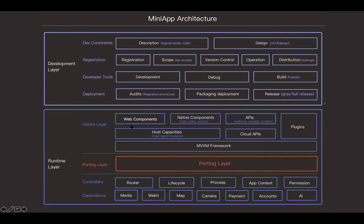The library layer contains many components, like web components and native components such as maps, videos, camera, canvas, and host capabilities. It has many APIs such as network request APIs, set storage APIs, and get location APIs, plus the basic libraries for MiniApp running code. The porting layer lets different user agents decide what interfaces and functions they want to implement and supply for their different MiniApp environments. The controller and dependency layer contains routers, lifecycles, app contexts, and permission management, plus hardware dependencies such as media, WebKit, maps, cameras, payment accounts, and AI libraries.